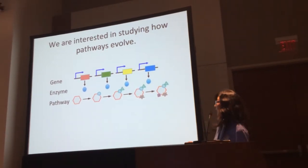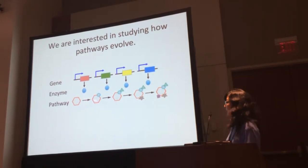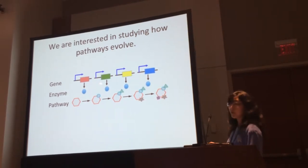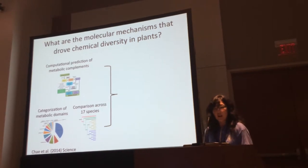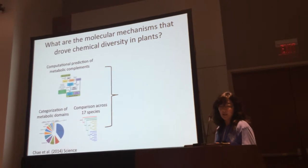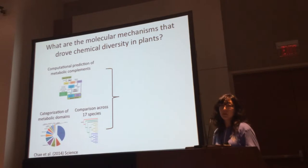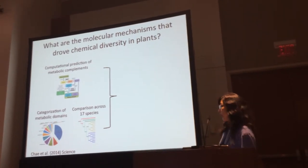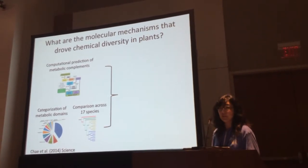This is a review of the components I'll be talking about. A pathway is a transformation of chemicals through reactions that are catalyzed by enzymes encoded by genes. We want to understand the molecular mechanisms that drove this chemical diversity in plants, and to do that we've developed a computational pipeline to predict metabolic complements such as enzymes, reactions, and pathways, categorized into 13 domains of metabolism compared across 17 plant species.